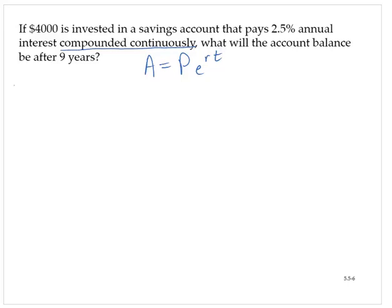P is the principal. That's the amount invested or borrowed, and in this problem is $4,000.